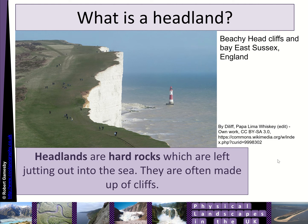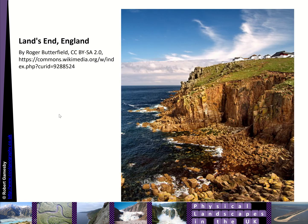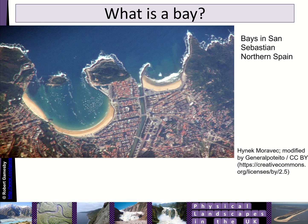Headlands are hard rocks which are left jutting out into the sea. They're often made up of cliffs and are often found at the end of discordant coastlines — we'll have a look at what that is in a moment. Here's Land's End, another headland sticking out into the sea. You can see rocks here that have fallen off, but obviously very tough, resistant rocks to remain sticking out into the sea.